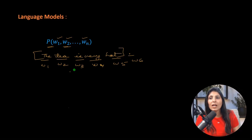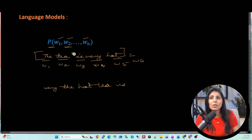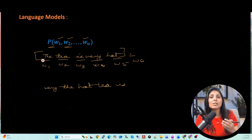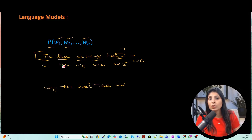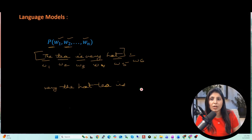Compare 'the tea is very hot' with 'very the hot tea is.' The first sentence is more natural. Language models try to learn the correct sequence of words in a sentence using probability. The correct sentence gets a high probability like 0.9, and the unnatural sentence gets a low probability like 0.1. The model picks the sequence with the highest probability.